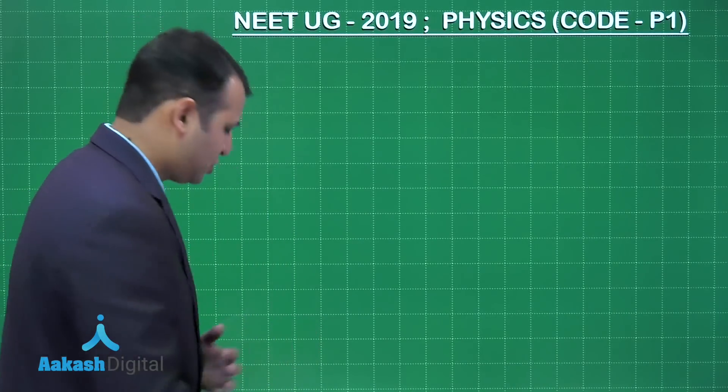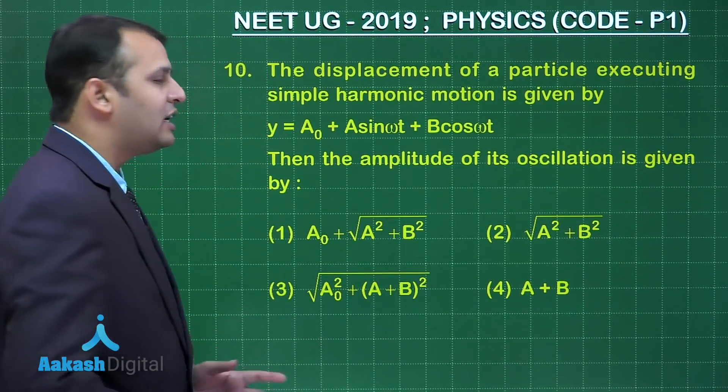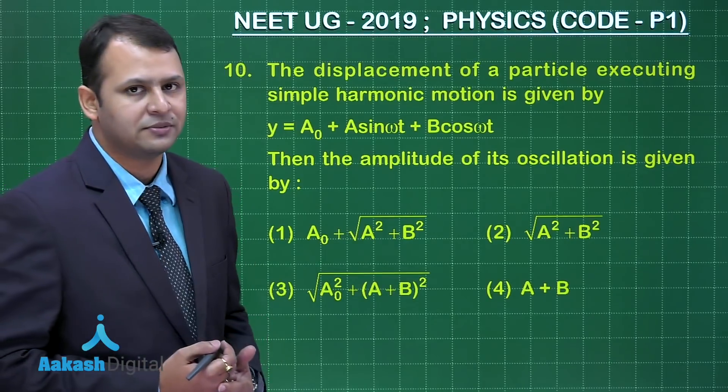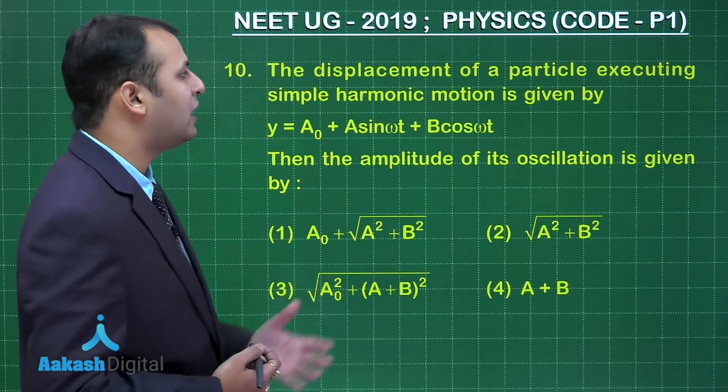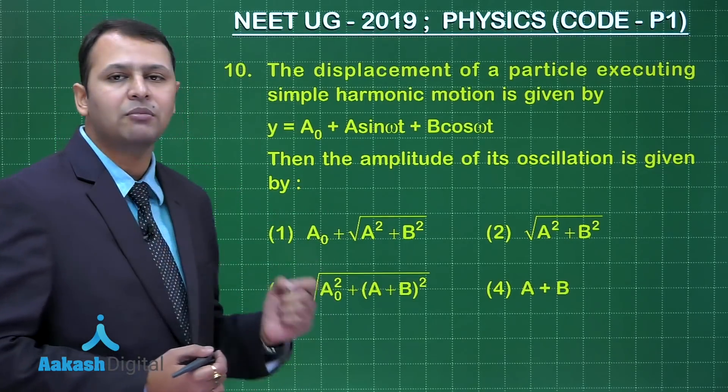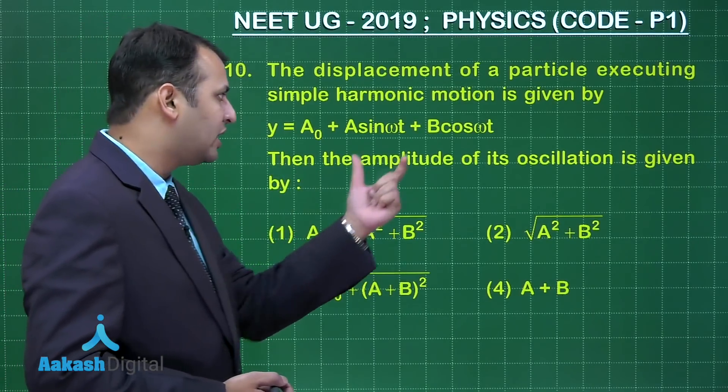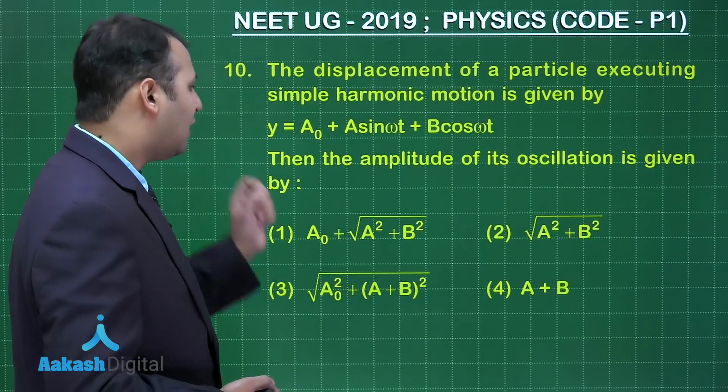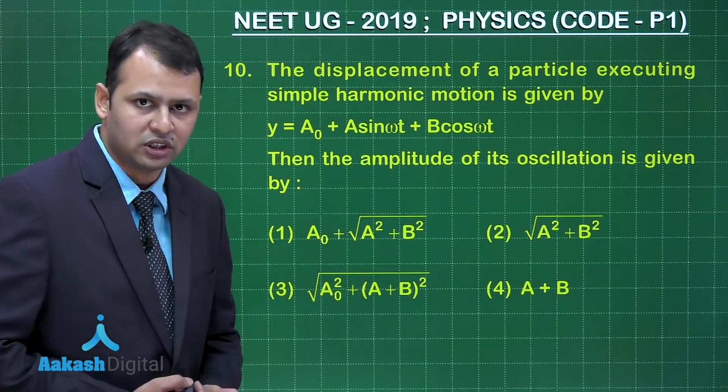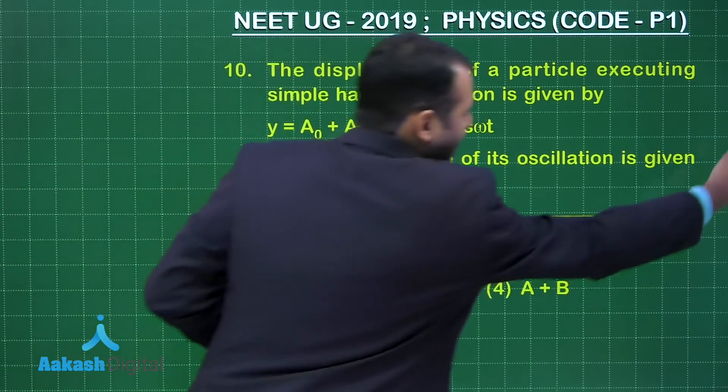Let's take on the next question, that is question number 10. The question you see belongs to chapter oscillations. The displacement of a particle executing simple harmonic motion is given by y equals A₀ plus A sin(ωt) plus B cos(ωt). Now we have to find the amplitude of this oscillation, so let's start with the solution.